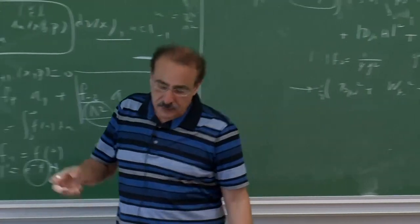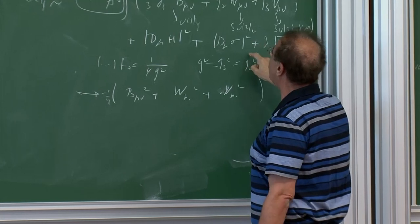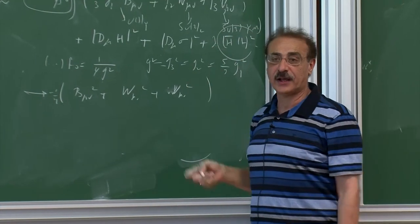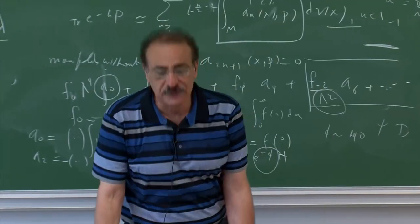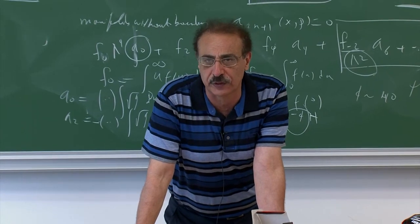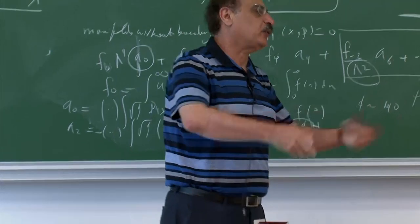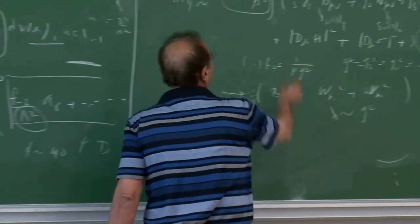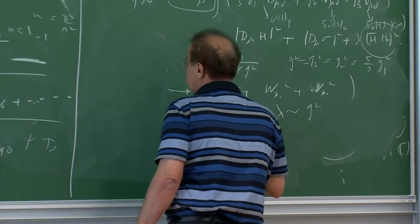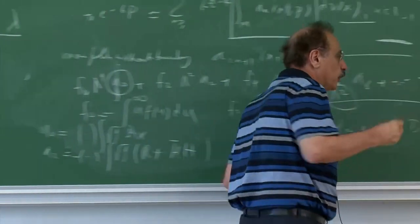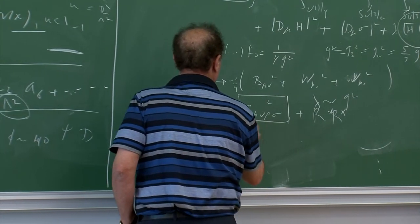The hierarchy problem arises because quadratic divergences require fine-tuning at every loop order. Once you have quadratic divergences you cannot control the scalar masses. The quartic couplings can be run via renormalization group equations, but the mass parameters receive uncontrollable additive corrections at each loop order.